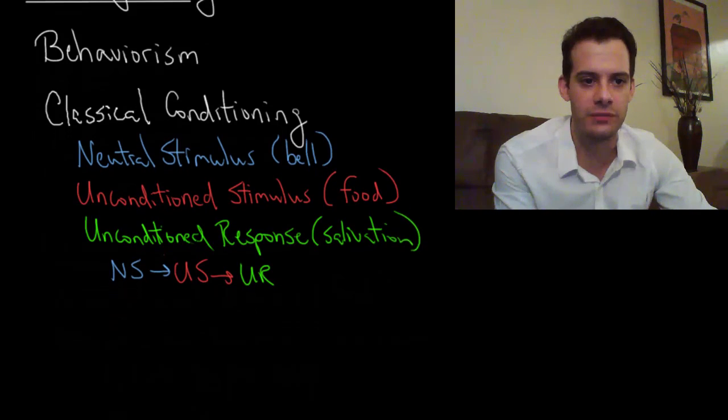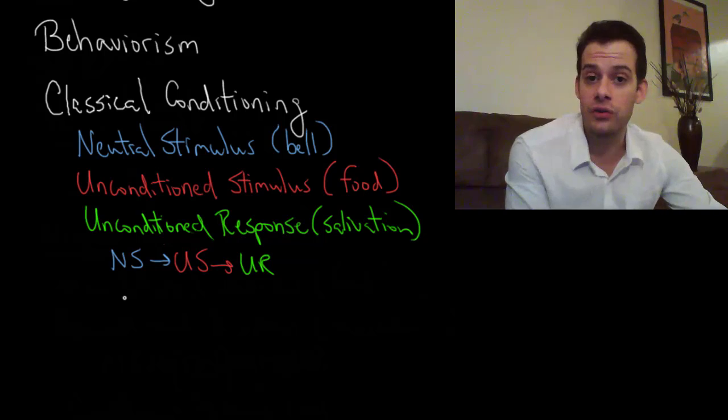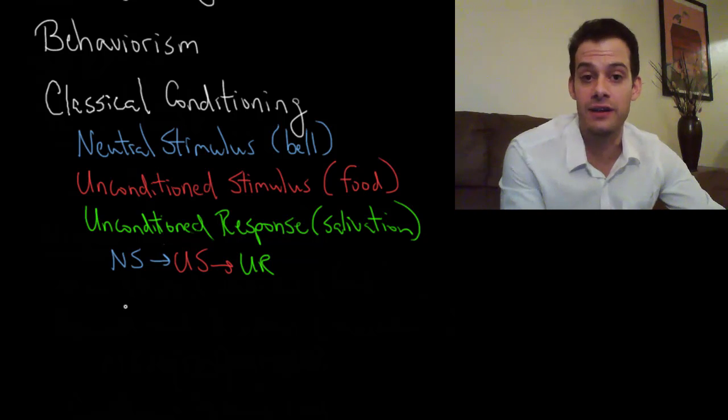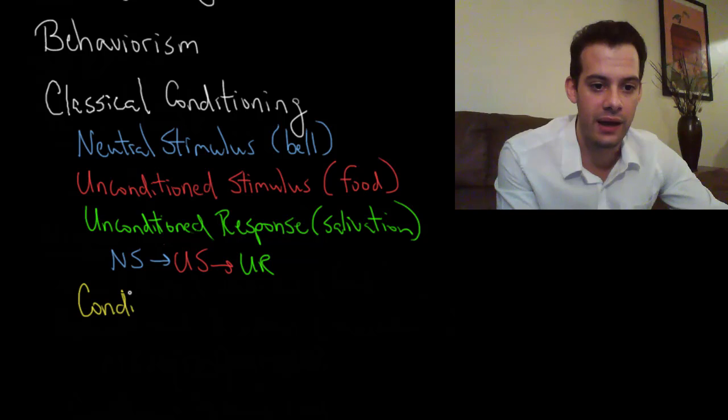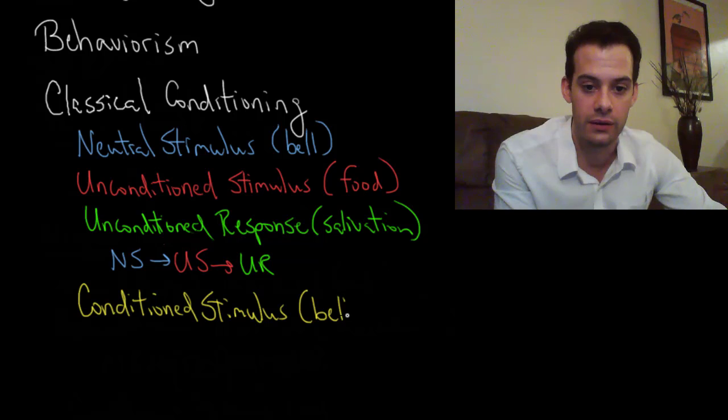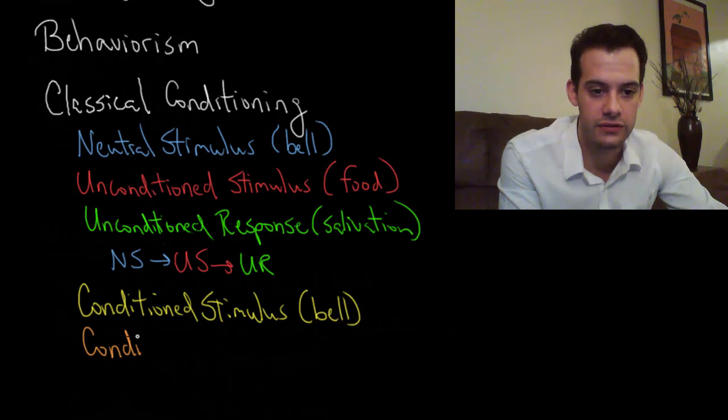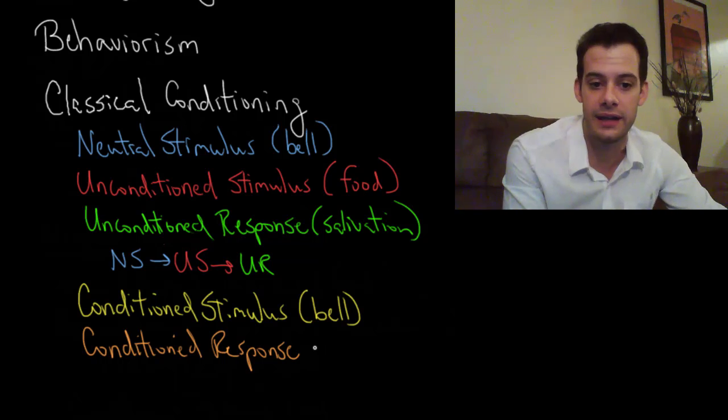Now once that has occurred we have to use some new terms here. So the neutral stimulus is no longer neutral. Now it's actually causing a response and it's a response that we've taught to the dog. So now we're going to switch out the word neutral because it's not neutral anymore. We're going to say that now the bell is a conditioned stimulus, meaning a stimulus that has been taught to the dog. It required training in order to get this to occur. So the bell goes from being a neutral stimulus to now being a conditioned stimulus. And the unconditioned response, salivating to food, is now a conditioned response. It's one that's been taught. So we can say it's a conditioned response and in this case we mean the salivating to the bell is what's been taught.